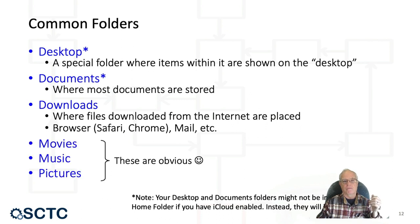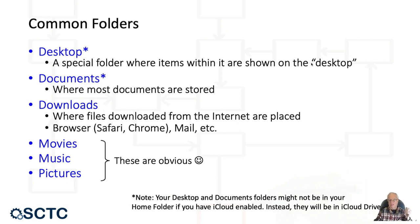There are also Movies, Music, and Pictures folders — those are obvious. One important note: if you have iCloud enabled, your Desktop and Documents folders are actually in your iCloud Drive. This means files you store there are replicated into the cloud, so they're available on other devices and protected if something happens to your computer. If you go to your home folder and don't see Desktop and Documents, they're in iCloud Drive — you can switch that back and forth.